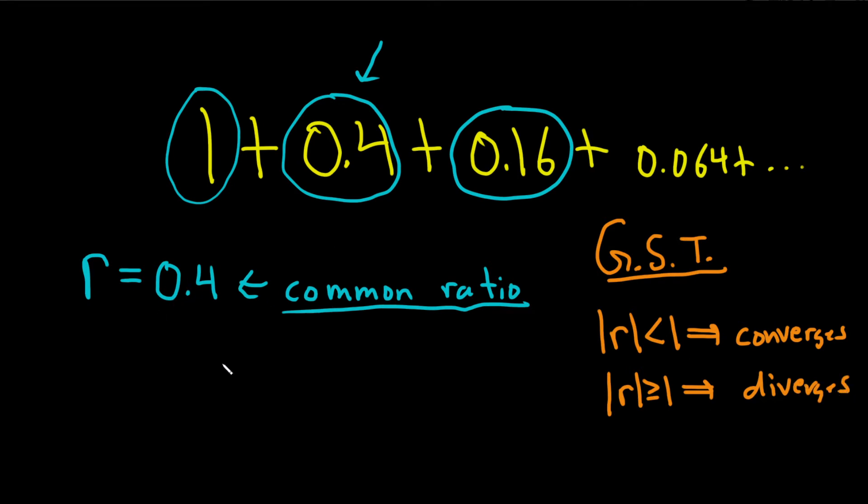So in this case, if you look at r, it's just 0.4. If you take its absolute value, you're just taking the absolute value of 0.4, which is 0.4. And that's less than 1. So our series converges.